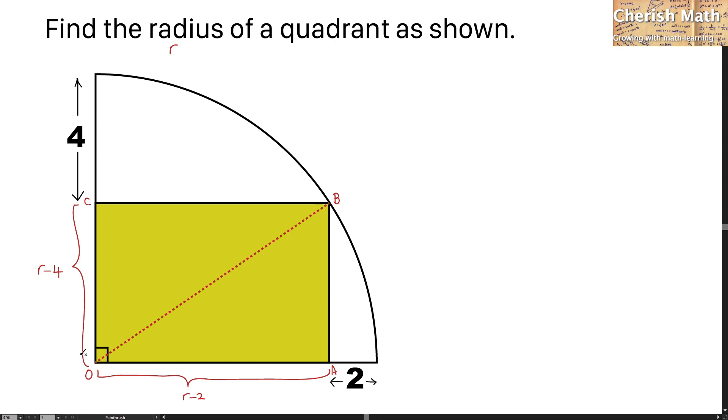Since the radius is denoted with the letter r, OB stands for the radius of the quadrant, which is denoted with r here.